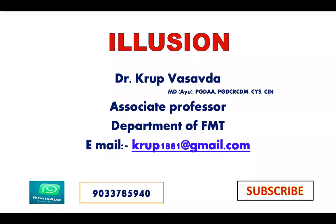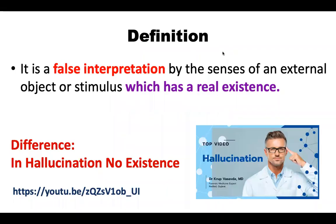Hello friends, this is Dr. Kru Pasada and our today's topic of discussion is illusion definition. It is a false perception by the senses of an external object or stimulus which has a real existence. Aisi koi cheez jiska real existence hai, uska false interpretation hota hai. It can involve the senses of an external object or stimulus.